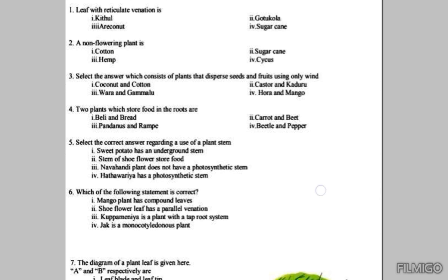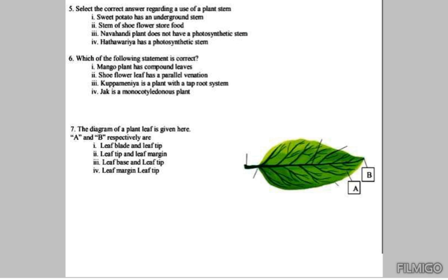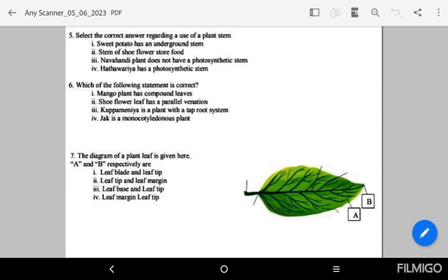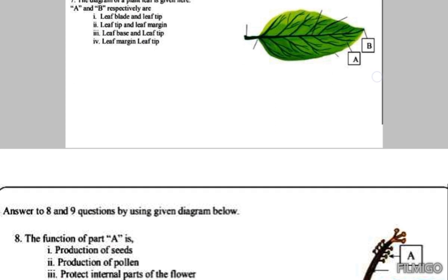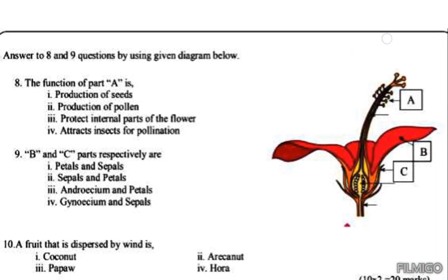Seventh question: we have to label this plant leaf. According to this diagram, A should be the leaf blade and B should be the leaf petiole. So the answer is the first one.